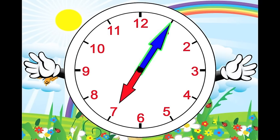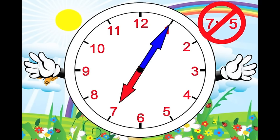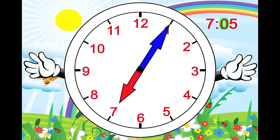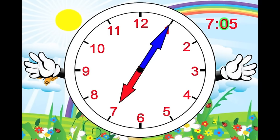One more thing. Look, the minute hand is pointing to 5 minutes. Would we say it's 7:5? No. We always tell everyone there's an O in front — we say it's 7:05. Well, I think you've got it. Now you know everything about clocks. So now when you need to go to a party, you'll be there on time.